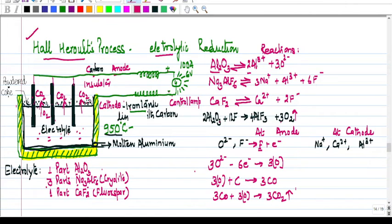Hello children, so we are going to now take up Hall-Heroult's process. Hall-Heroult's process is actually part of electrolytic reduction. We first took aluminum, we took bauxite ore Al2O3·2H2O. This bauxite ore we concentrated through Bayer's process and we got pure alumina Al2O3.